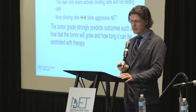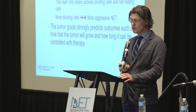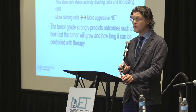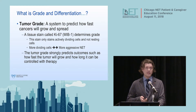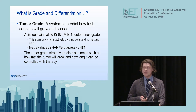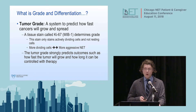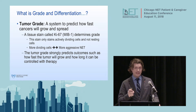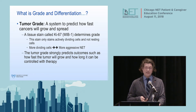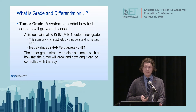Tumor grade is really a system to predict how fast these tumors will grow and spread. There are a number of ways we can do that. We can count how many cells are actively dividing, or we can stain the active cells with a stain called Ki-67 or MIB1. This stain sticks to cells that are growing or dividing and doesn't stick to those that are resting. More dividing cells means a more aggressive cancer.